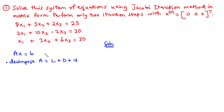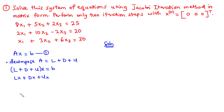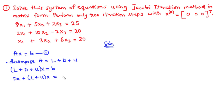Putting this decomposition into equation Ax = b, we substitute A with L plus D plus U, giving us (L + D + U)x = b. Multiplying out, we have Lx plus Dx plus Ux equals b. We then group L and U together, so we have Dx plus (L + U)x equals b.